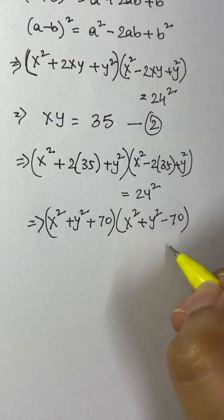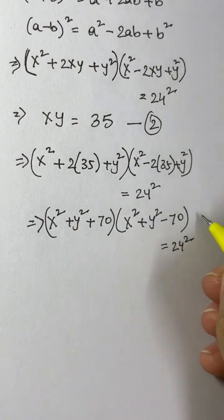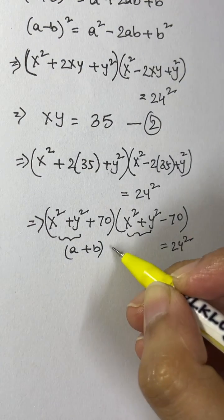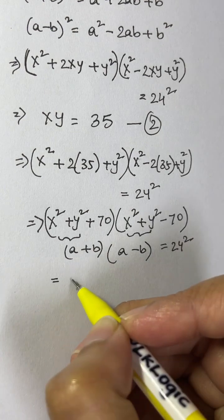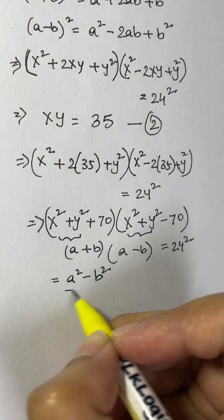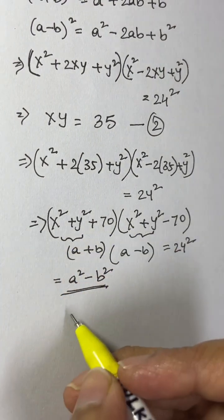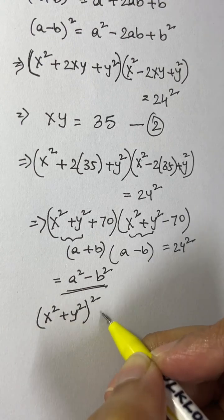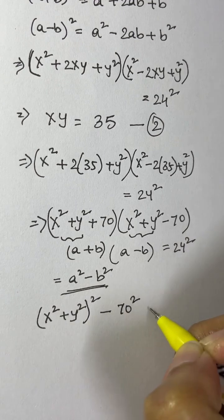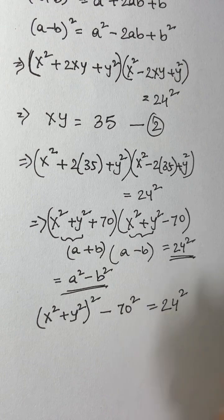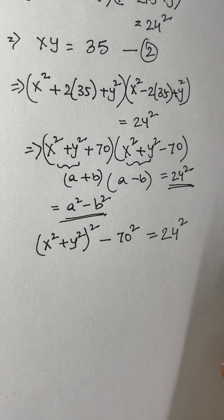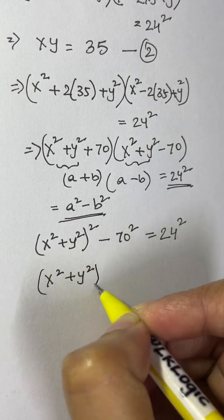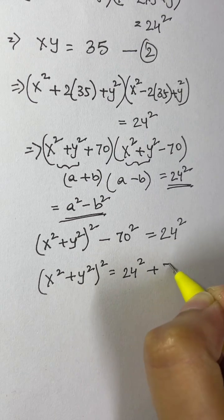Which is equal to 24 squared. We can see that this is again the identity a plus b times a minus b, which equals a squared minus b squared. So we have x squared plus y squared, the whole squared, minus 70 squared, is equal to 24 squared.